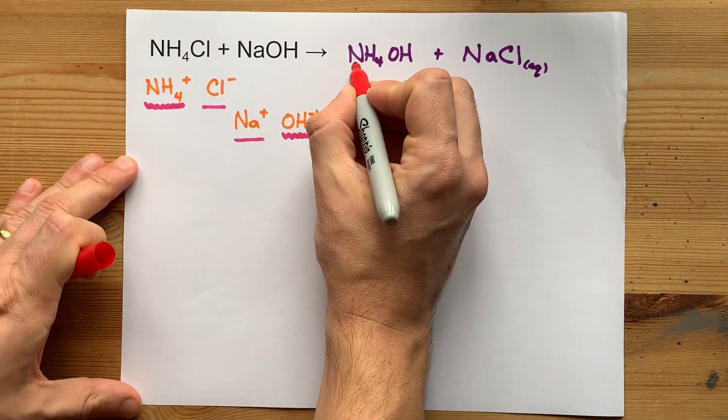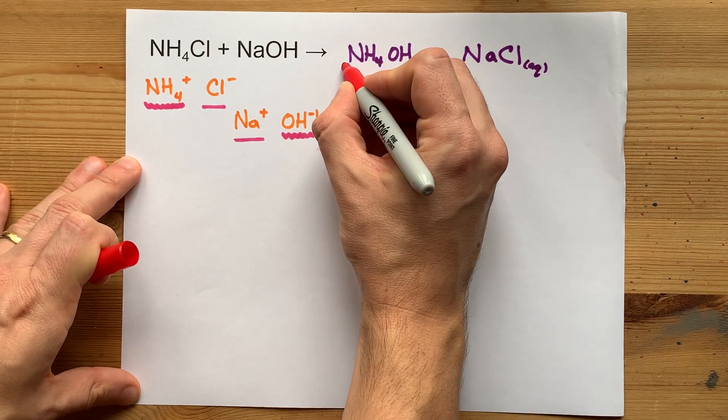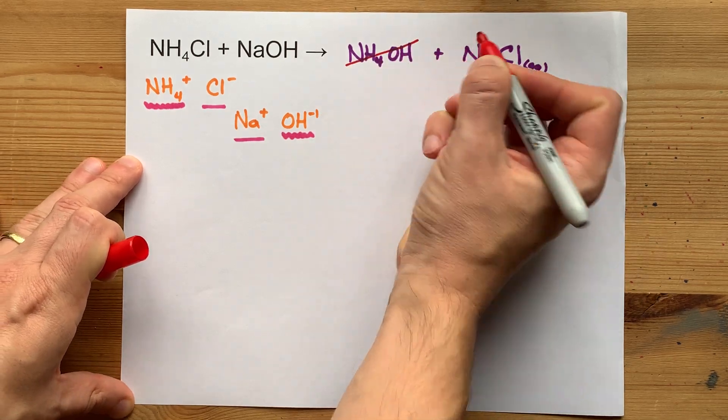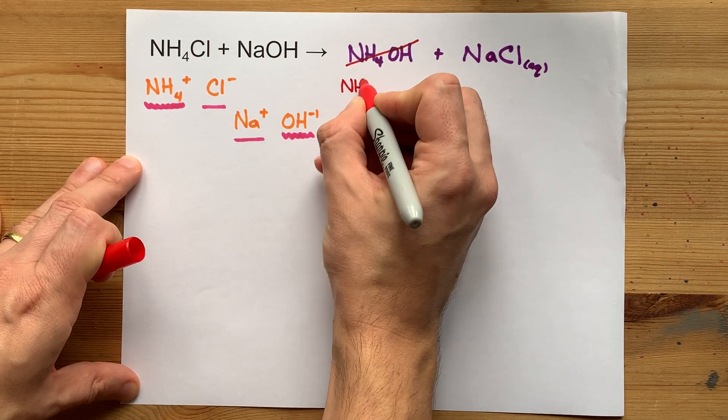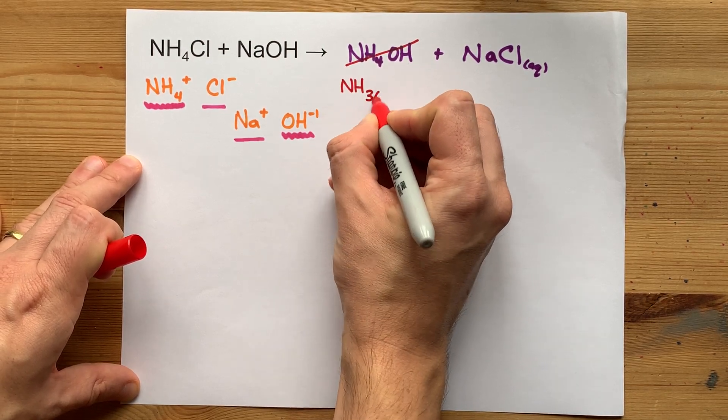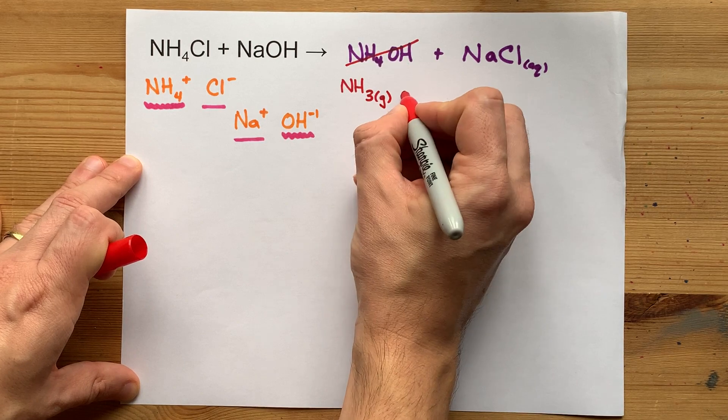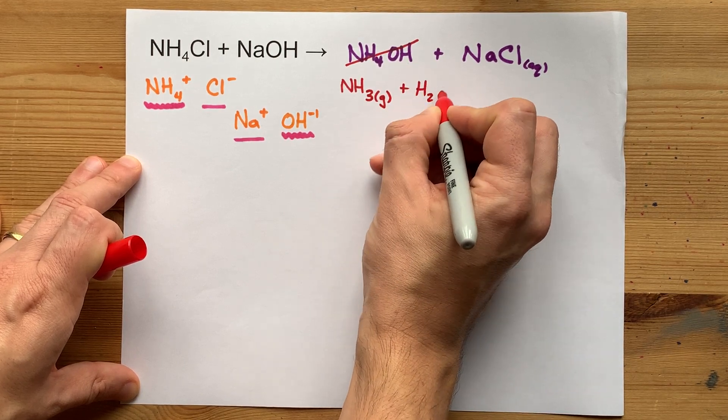Your teacher probably wants you to know that NH4OH will further decompose. As soon as it forms, it breaks apart, a little bit at least, into NH3, which is ammonia gas, and water, which is a liquid.